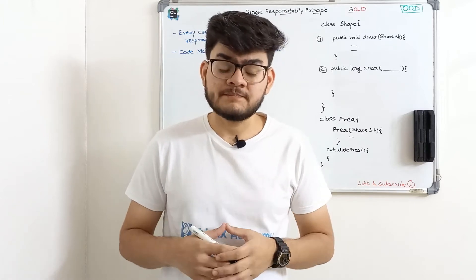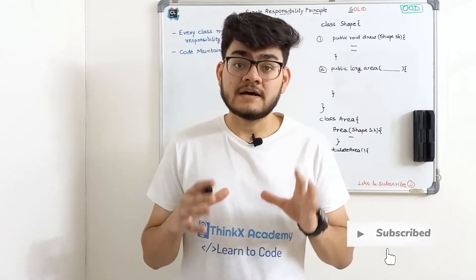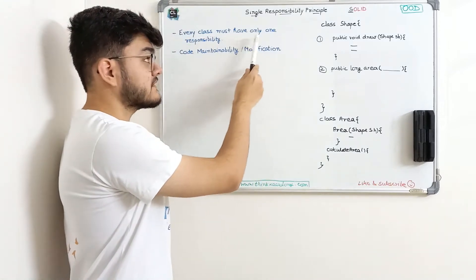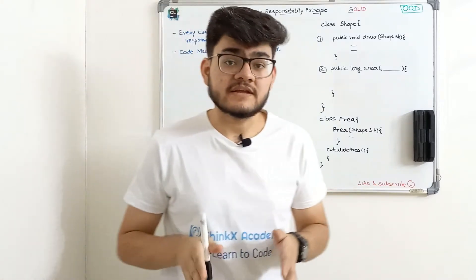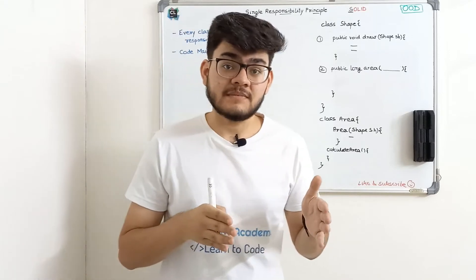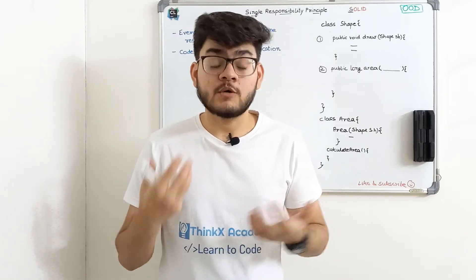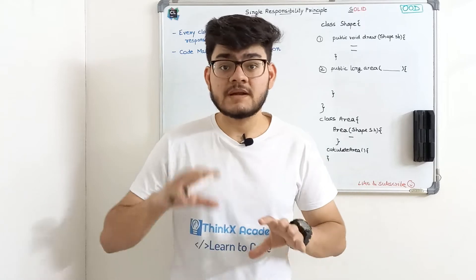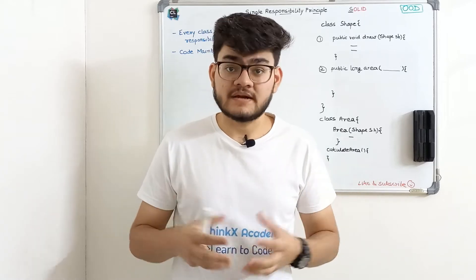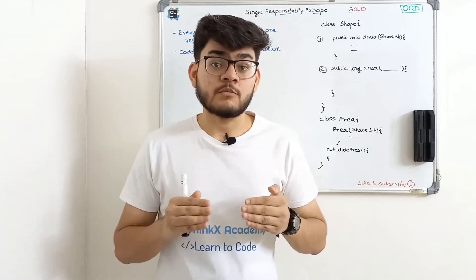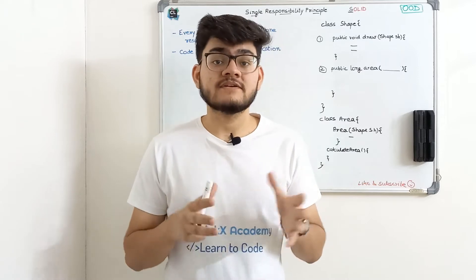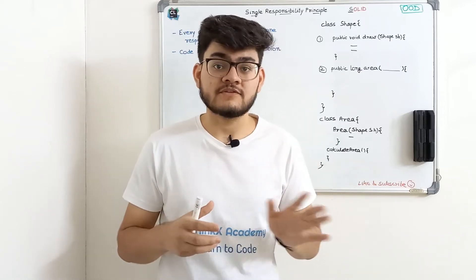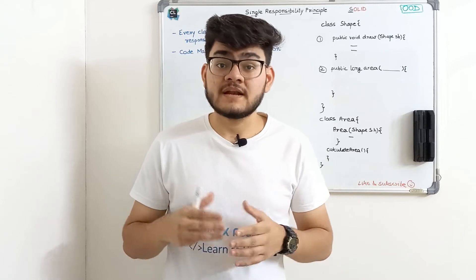The principle says that every class must have only one responsibility. Since we are studying object-oriented design, we will have to associate every principle and pattern with object-oriented programming — it's all about classes and objects. So Single Responsibility says that every single class will have only one responsibility.